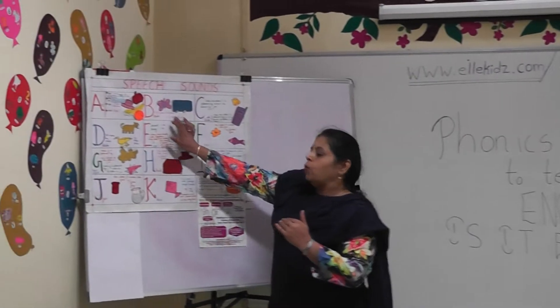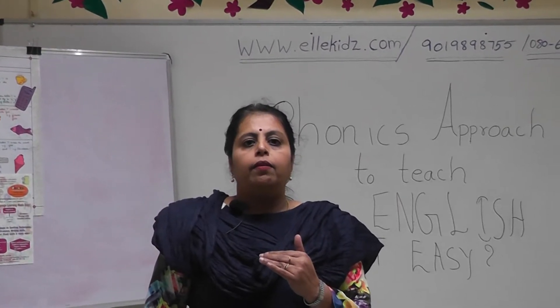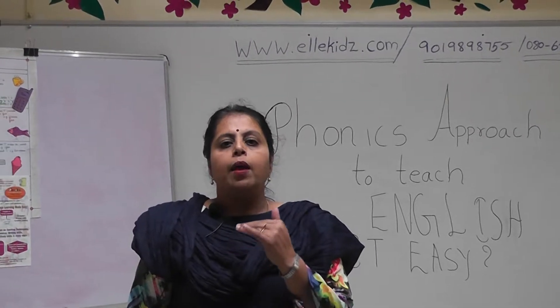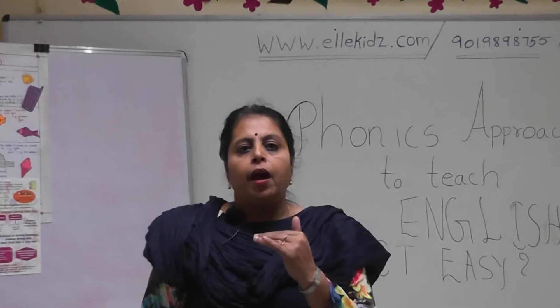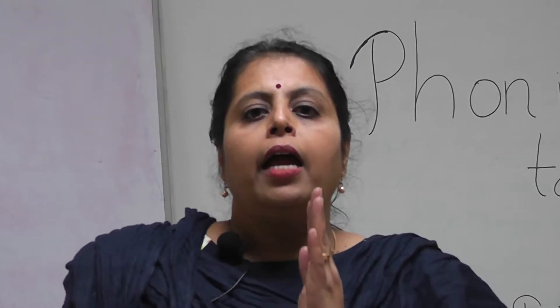B has only one sound: B. Let us understand it very clearly. B has only one sound — B, as in banana, as in boy, as in bird, as in balloon. So now let us understand, B is not at all a complicated one. The child can understand the letter B and is able to identify it very clearly and easily.